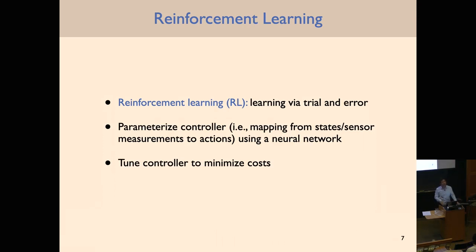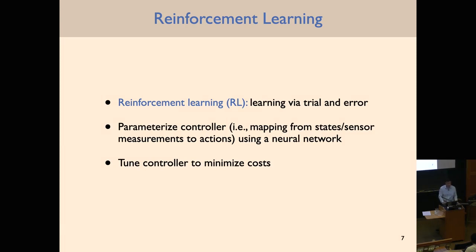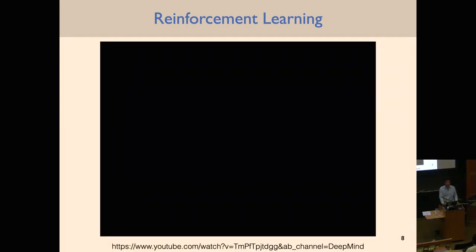As the video showed, RL is basically about doing trial and error. We're going to parameterize some controller — some feedback controller — as a mapping from states or observations to actions using a neural network, and then tune the weights of the neural network to minimize costs.